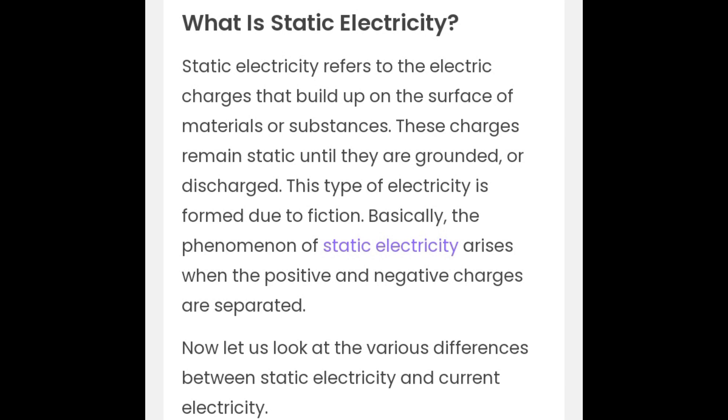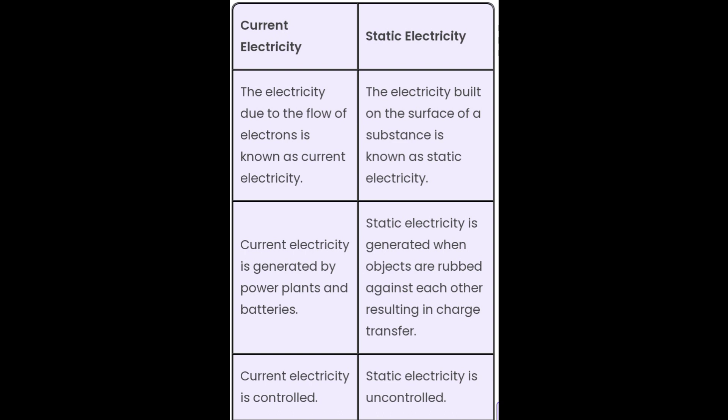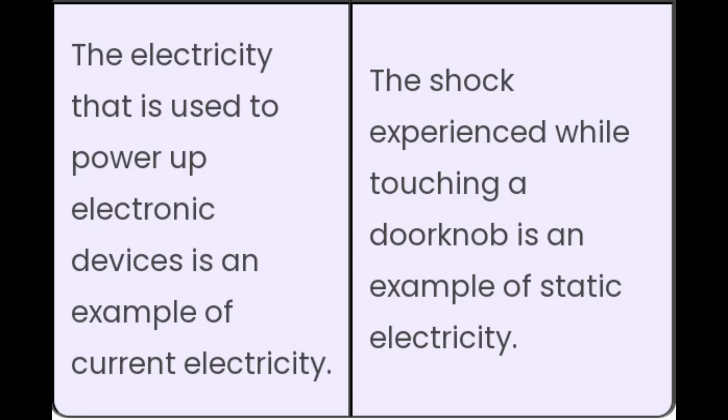Now, let us look at the various differences between static electricity and current electricity. The electricity due to flow of electrons is known as current electricity, while the electricity built on a surface of a substance is known as static electricity. Current electricity is generated by power plants and batteries, whereas static electricity is generated when objects are rubbed against each other, resulting in charge transfer. Current electricity is controlled, while static electricity is uncontrolled. The electricity used to power electronic devices is an example of current electricity, and a shock experienced while touching a door knob is an example of static electricity.